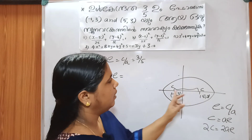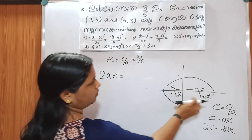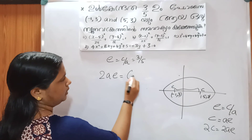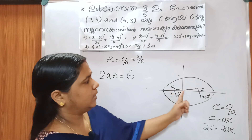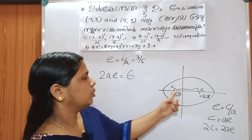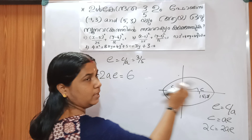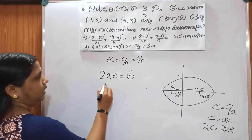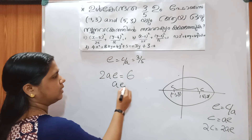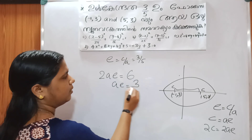The x-coordinates of the foci are 5 and minus 1. The distance between them is 5 minus minus 1, which equals 6. So 2ae equals 6.